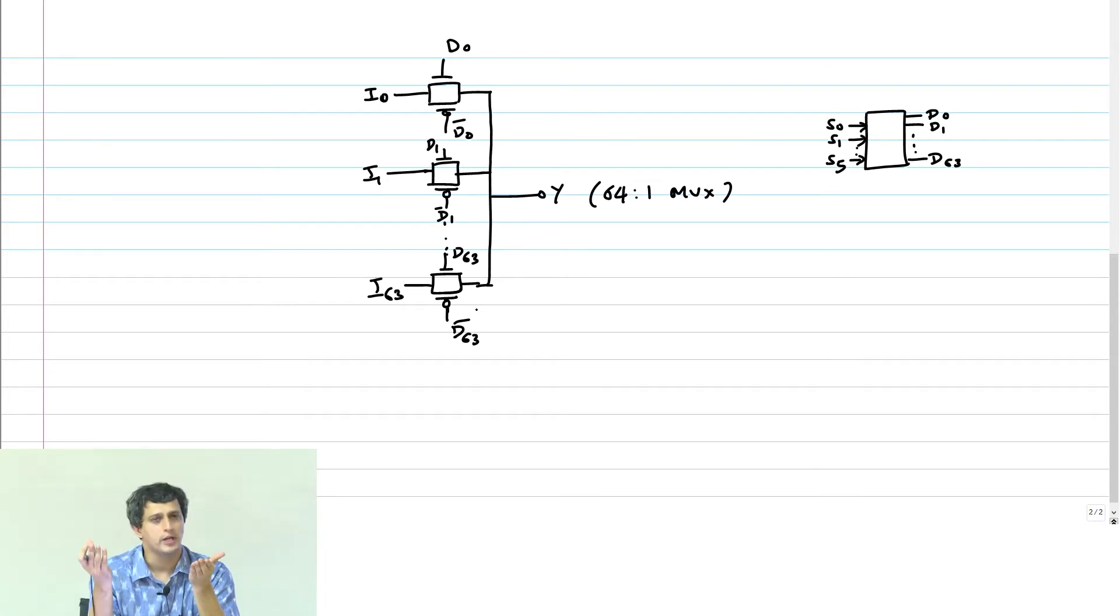How do you implement a decoder? Well, that again cannot be done, just for example, if I want a 6-input NAND gate, I cannot do it for logical effort reasons. Therefore, you build this from smaller 3-to-8 decoders. You build 3-to-8 decoders and cascade them and then build your 6-to-64 decoder.